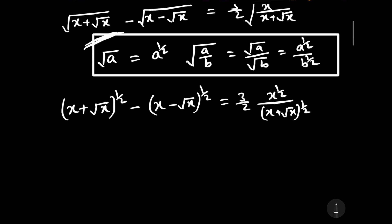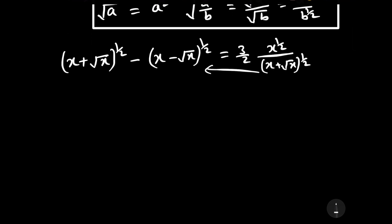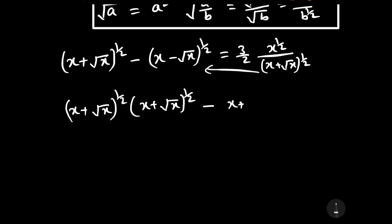Further, we will cross multiply to the LHS side. Then we will have (x plus square root of x)^(1/2) multiplied by (x plus square root of x)^(1/2), minus (x plus square root of x)^(1/2) multiplied by (x minus square root of x)^(1/2), is equal to (3/2) x to the power 1/2.